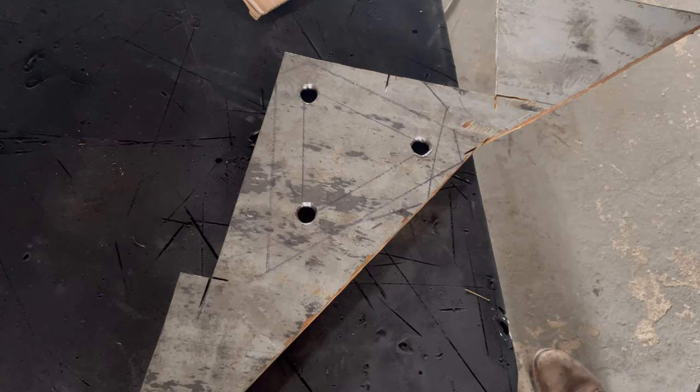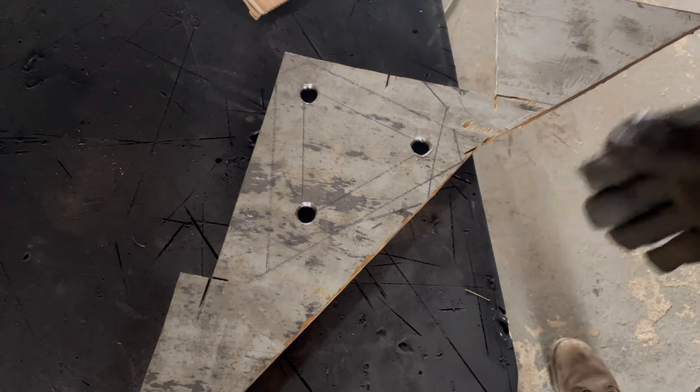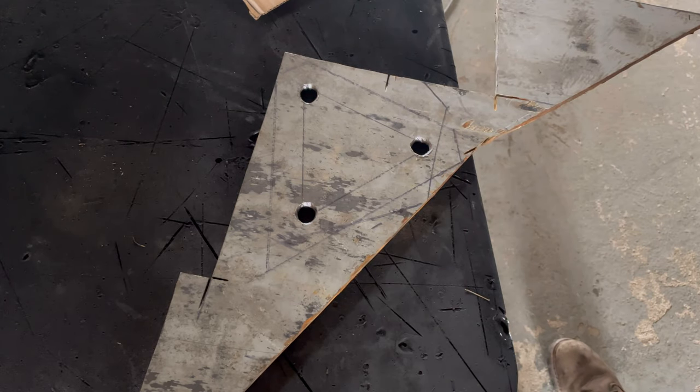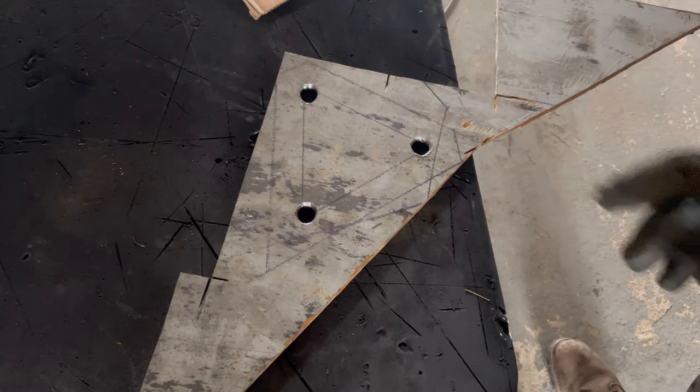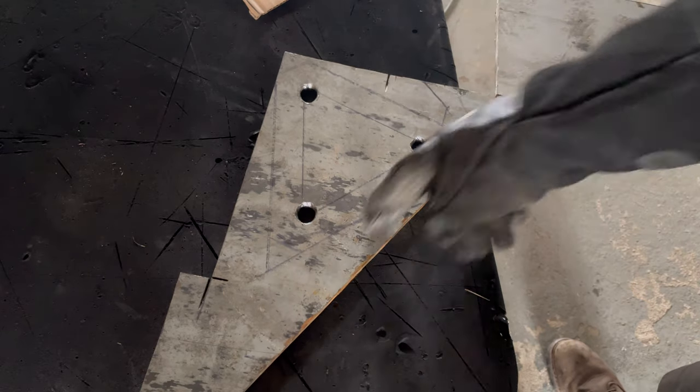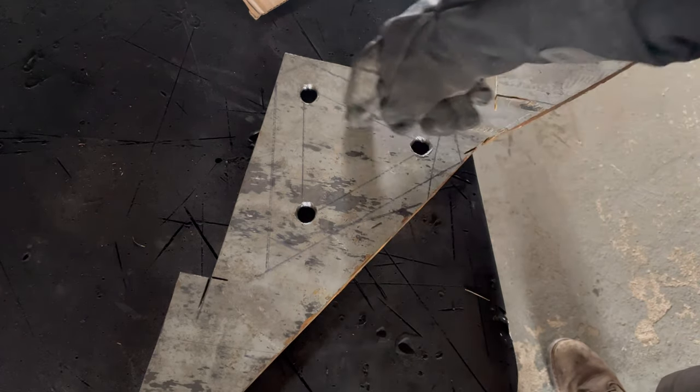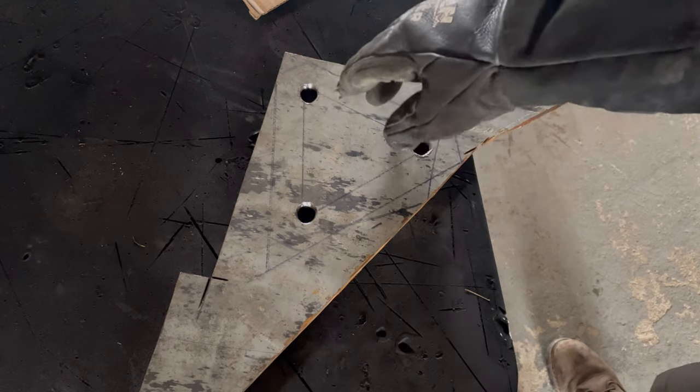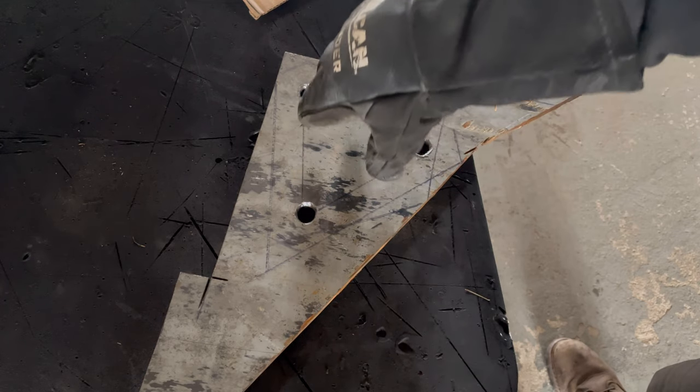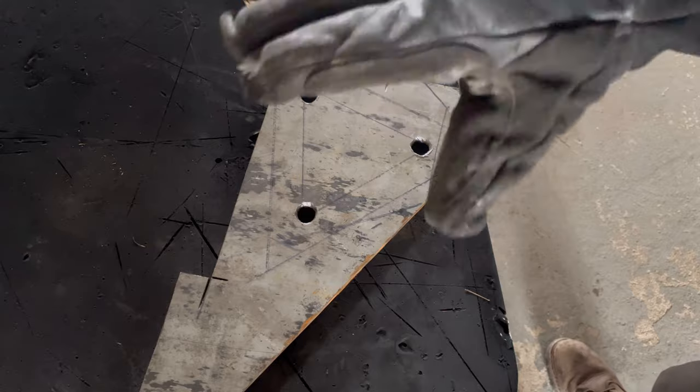I went ahead and bored the holes out just a little bit more that way they slide in and hit the weld on the actual plate. Now I'm going to cut these up right here and then we're going to mount it, get a template for the hub here on the wheel, and then start the fabrication for the piece that comes out of this onto the gas can carrier.